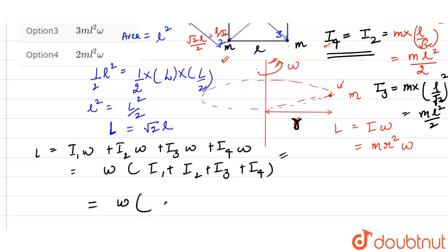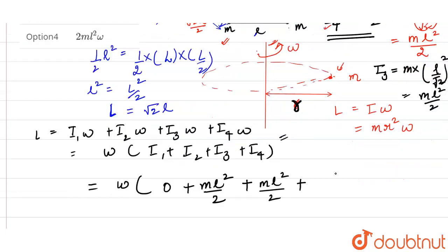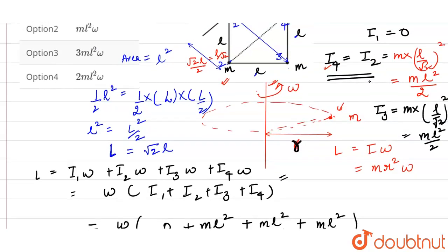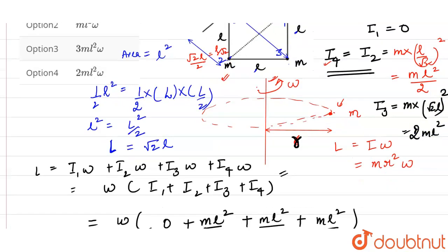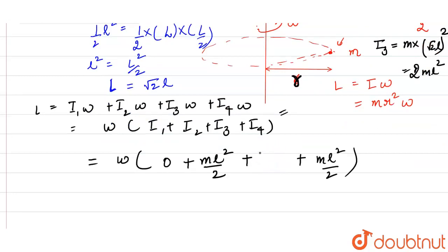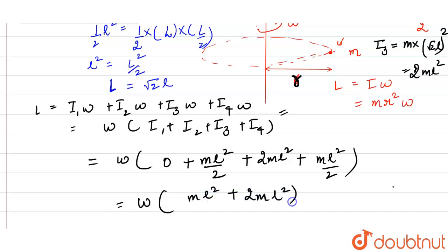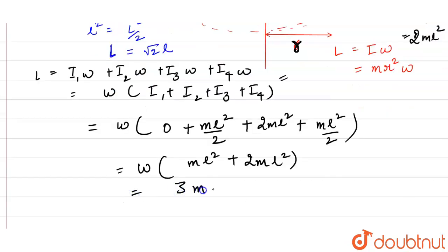Putting all moments of inertia together: I1 = 0, I2 = ML²/2, I3 = 2ML², I4 = ML²/2. Adding them up: 0 + ML²/2 + 2ML² + ML²/2 = ML² + 2ML² = 3ML². Therefore the total angular momentum is 3ML²·omega. This is our final answer.